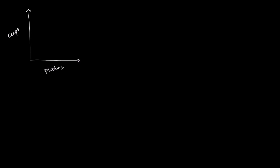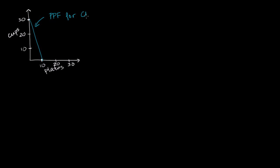Let's say we have a producer, Charlie. If he were to focus all of his time on cups, he could produce 30 cups. And if he were to focus all of his time on plates, he could produce 10 plates. We're going to assume he has a linear production possibilities frontier, so this is what his PPF is going to look like — connecting those two endpoints.